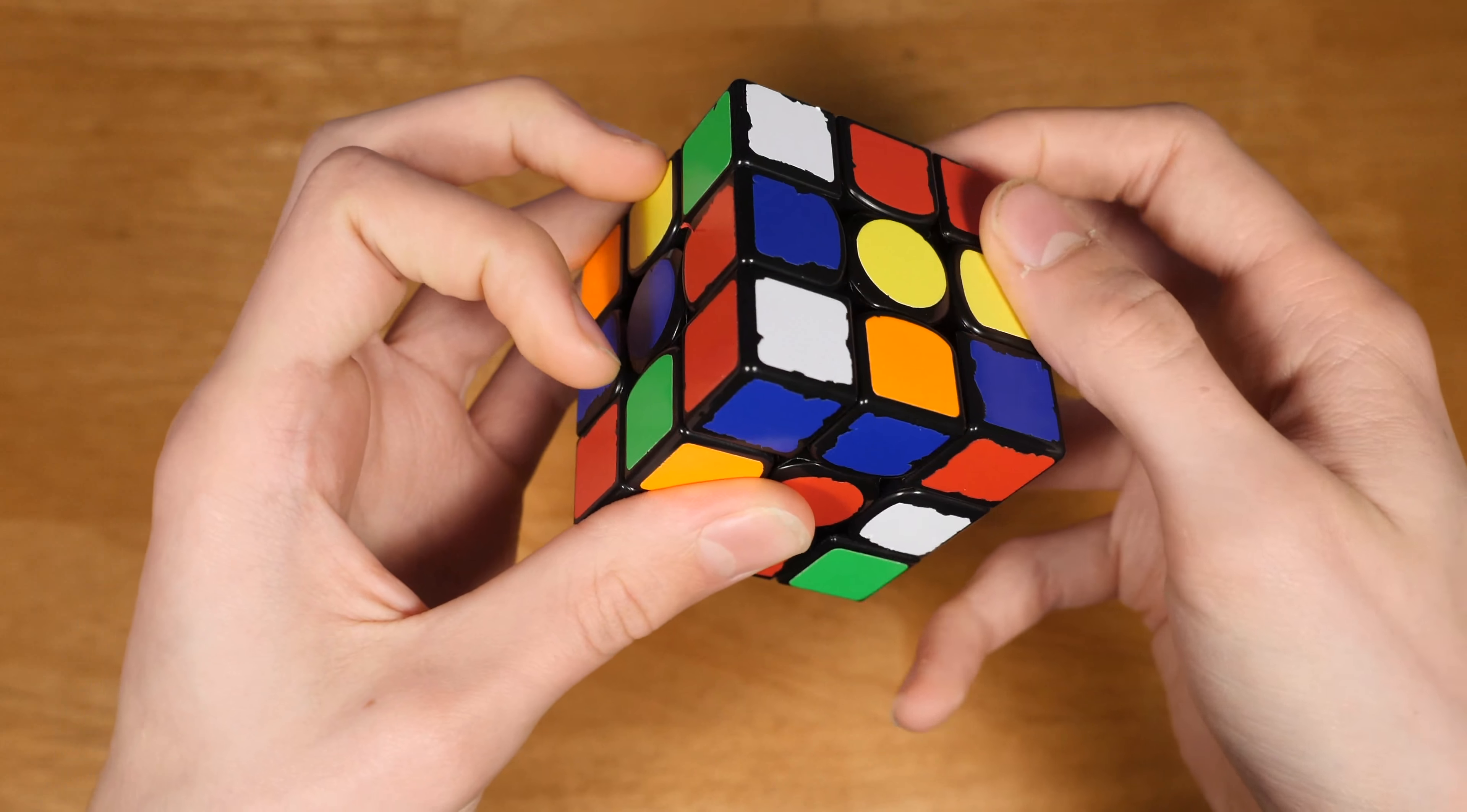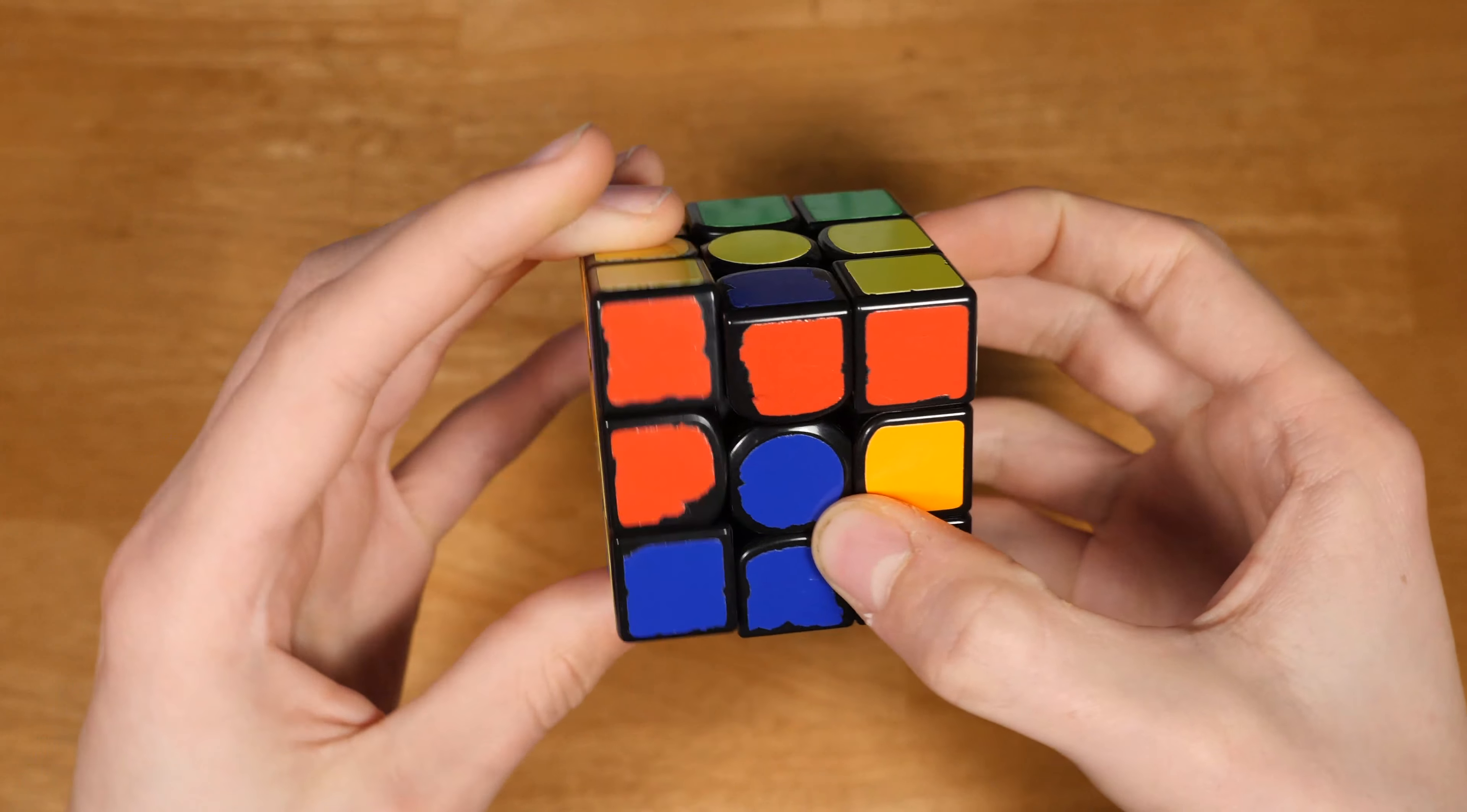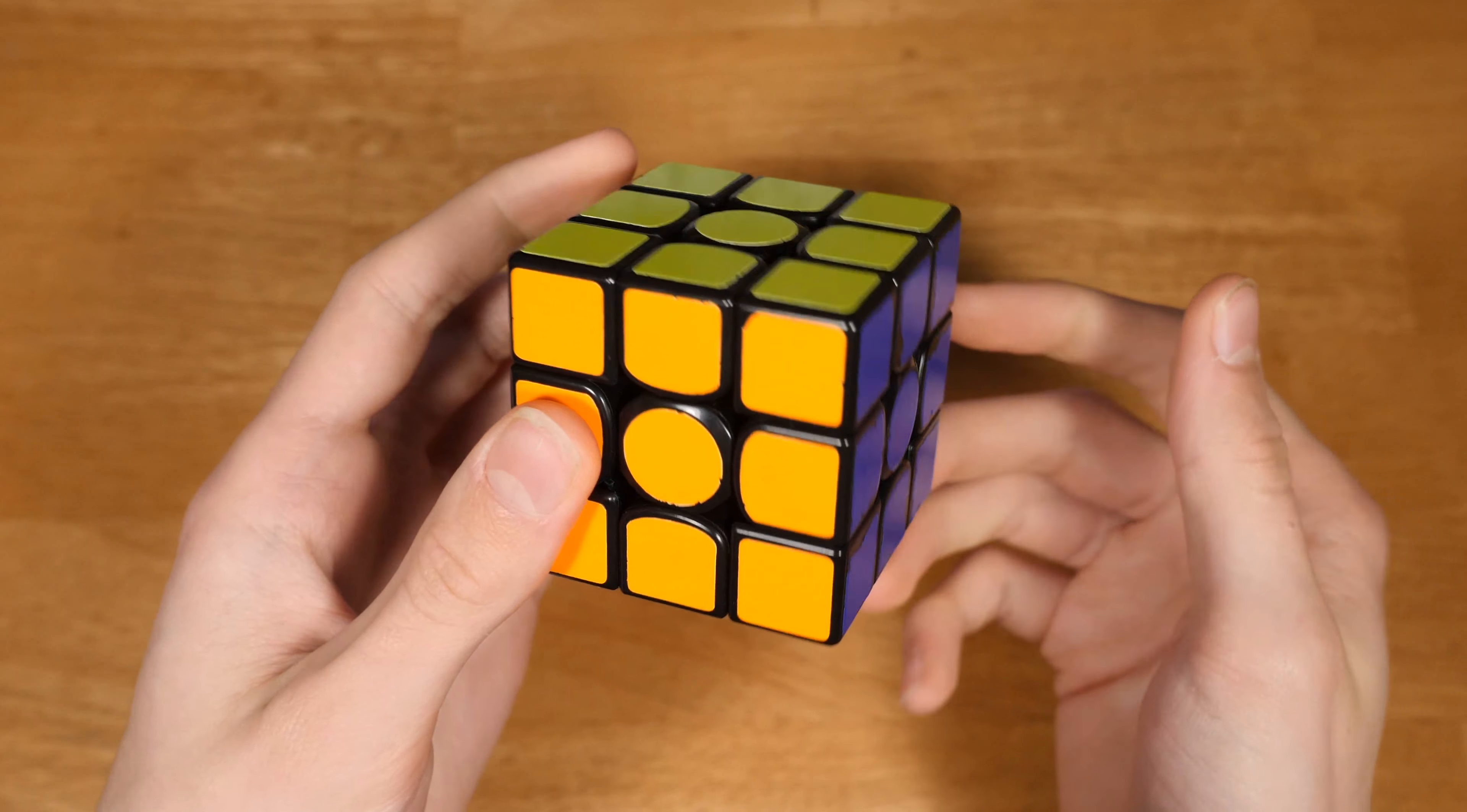Now he does this pair and sees the next pair immediately, so he rotates and does that pair. As he's doing this pair, he sees the next one. The third pair is pretty easy to see, so this is already spotted. You can immediately rotate and do that, and then just OLL and PLL skip.